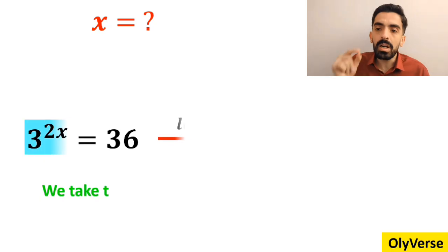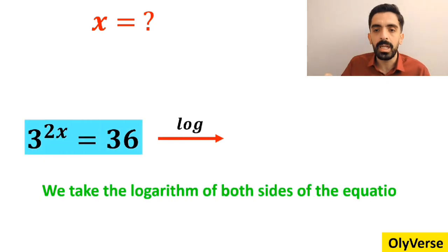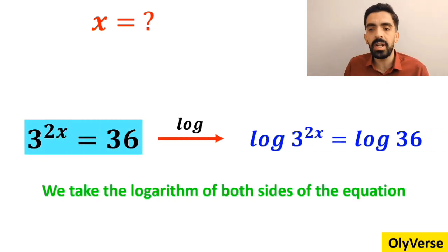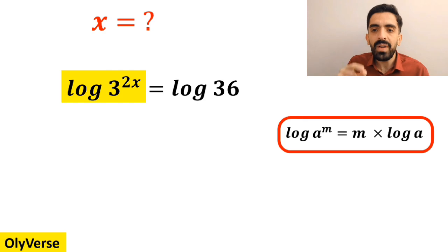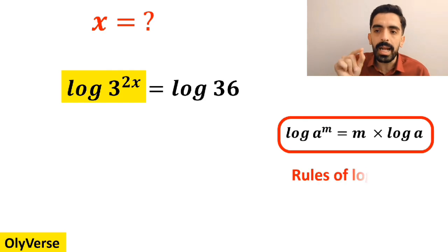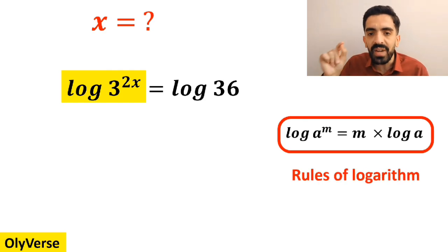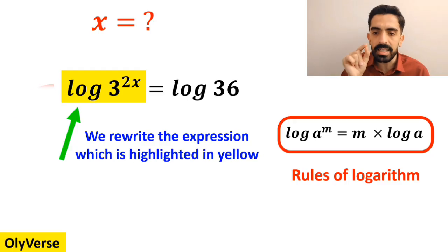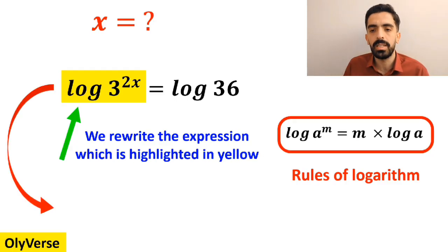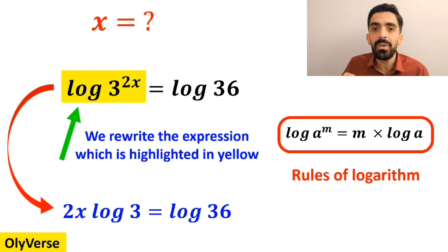Now we take the logarithm of both sides of the equation, which becomes log of 3 to the power of 2x is equal to log of 36. Based on the rules of logarithms, log of a to the power of m is equal to m times log of a. So we can rewrite the expression highlighted in yellow as: 2x times log of 3 is equal to log of 36.